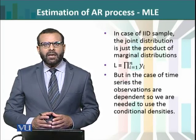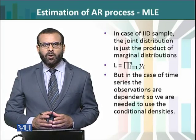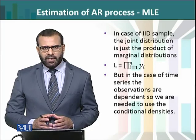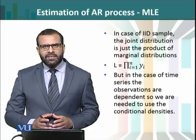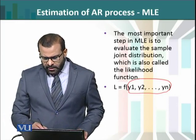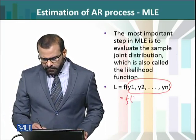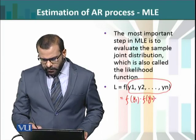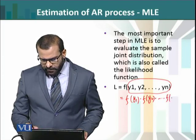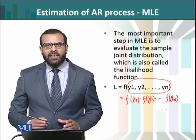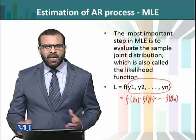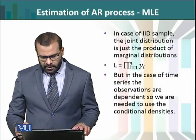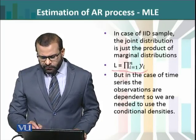Agar hamare paas IID sample ho — yaani independently and identically distributed sample — to us case mein yeh bahut aasaan hota hai. Jo joint density hai, usko is concept ke saath likh sakte hain as: f(y1) × f(y2) × ... × f(yn). Yaani aap joint density ko likh sakte hain as a product of marginal densities, agar aapki observations IID hain — independent bhi hain aur identically distributed bhi hain. Is case mein likelihood function phir kuch is form mein aa jayega.